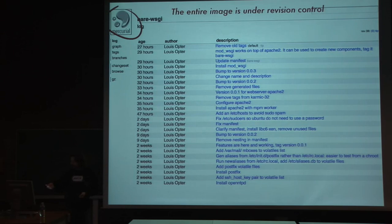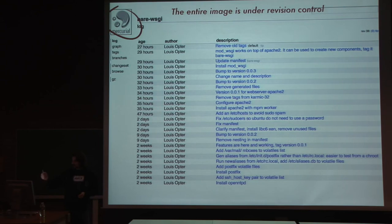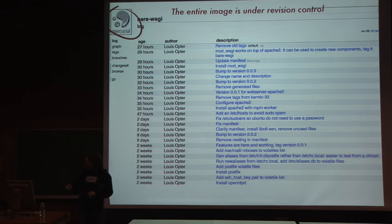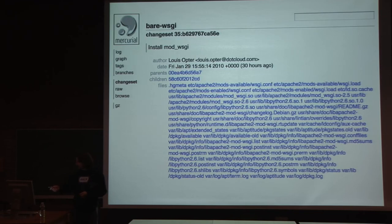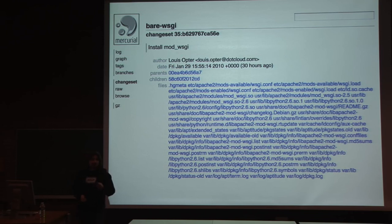Here's a quick example. If anybody uses Mercurial, you'll recognize the Mercurial server interface. This is not our web code — this is an image that a friend of ours made. It's the bare WSGI server, an Apache configuration to serve Python apps. You can see the complete history of the image, and you can inspect a specific change — here I see changes in the Apache configuration. This changeset shows he installed a module, and you can see all the files that changed. The interesting thing is we didn't replicate the work of Mercurial — we use it. We take the image and put it in Mercurial. You can actually do HG pull on the image.